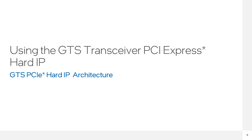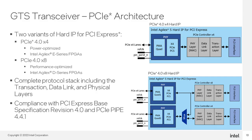With our understanding of the GTS transceivers, we can now focus on the PCIe Hard IP and its architecture. There are two variants of Hard IP for PCIe available in GTS transceivers. First is the PCIe Gen 4x4 variant, optimized for low power, found in Agilex 5 E-series FPGAs. The second variant is PCIe Gen 4x8, optimized for performance, found in Agilex 5 D-series FPGAs. Similar to other FPGA families, both variants implement the complete protocol stack including the transaction, data link, and PHY layer. Both variants are fully compliant with PCIe Express base spec revision 4.0 and PIPE 4.41.